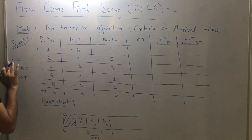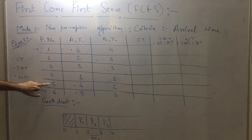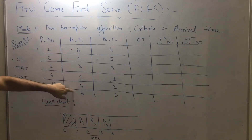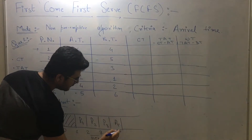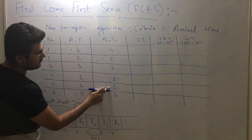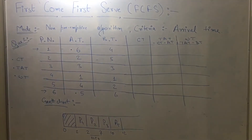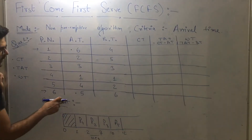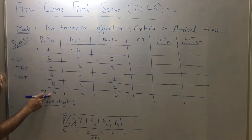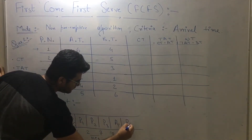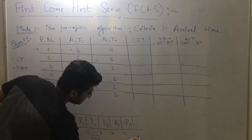Process three is now completed. The next minimum arrival time among process one, five, and six is four, belonging to process number five. We schedule process five with burst time of two units, so ten plus two equals twelve units. Next, the minimum arrival time is process number six with arrival time five units. We schedule process six, which has burst time of six units, so twelve plus six equals eighteen units.